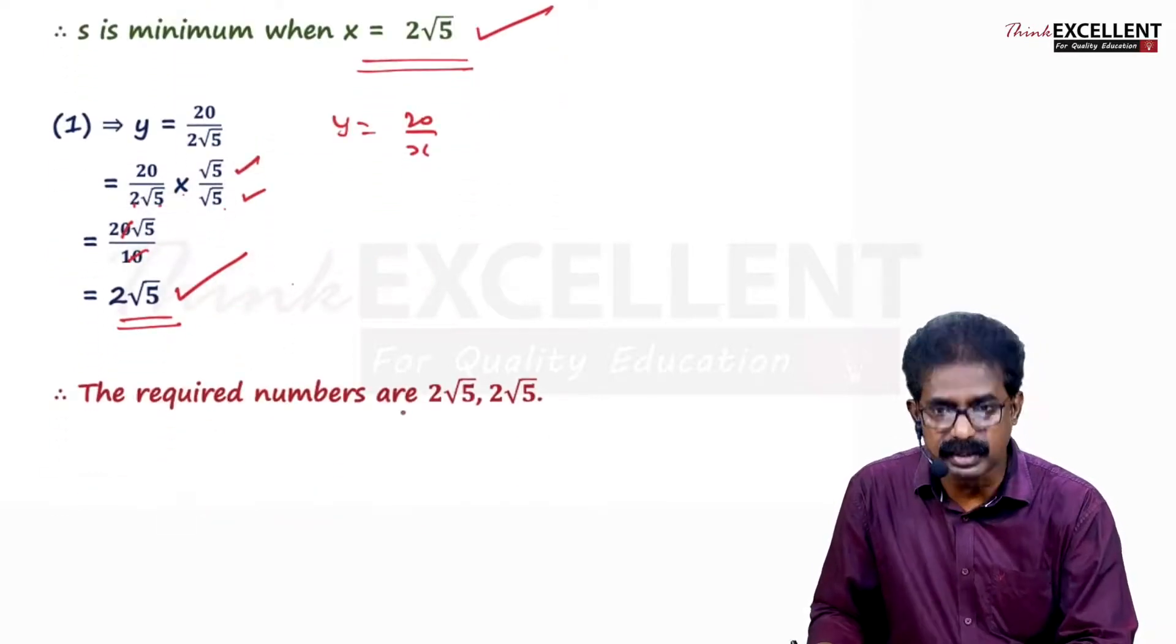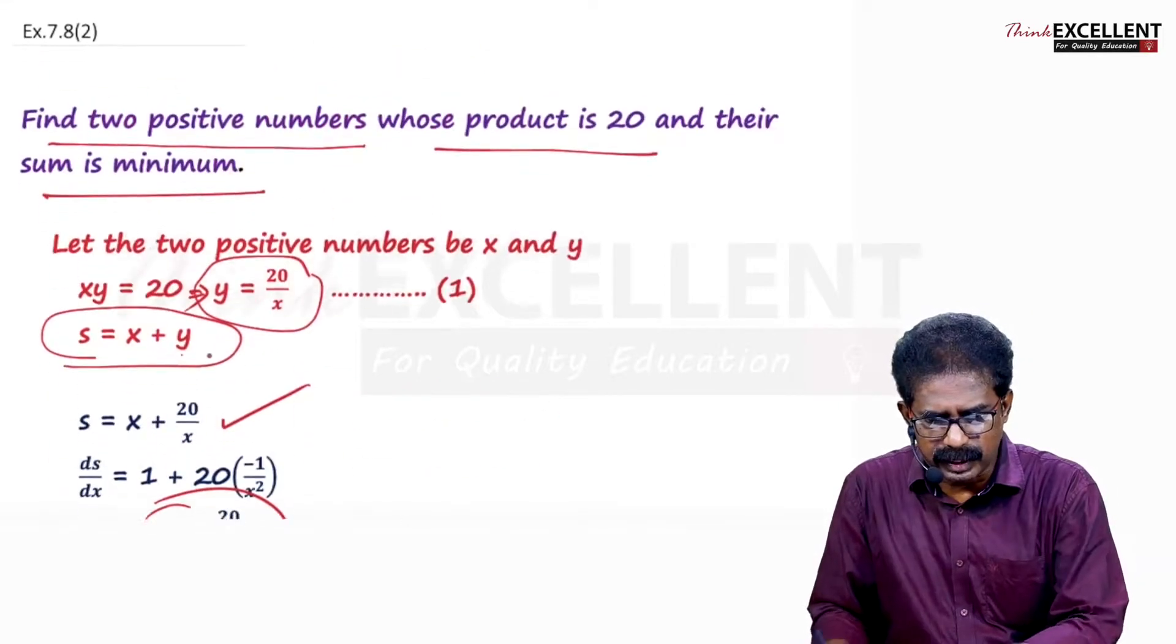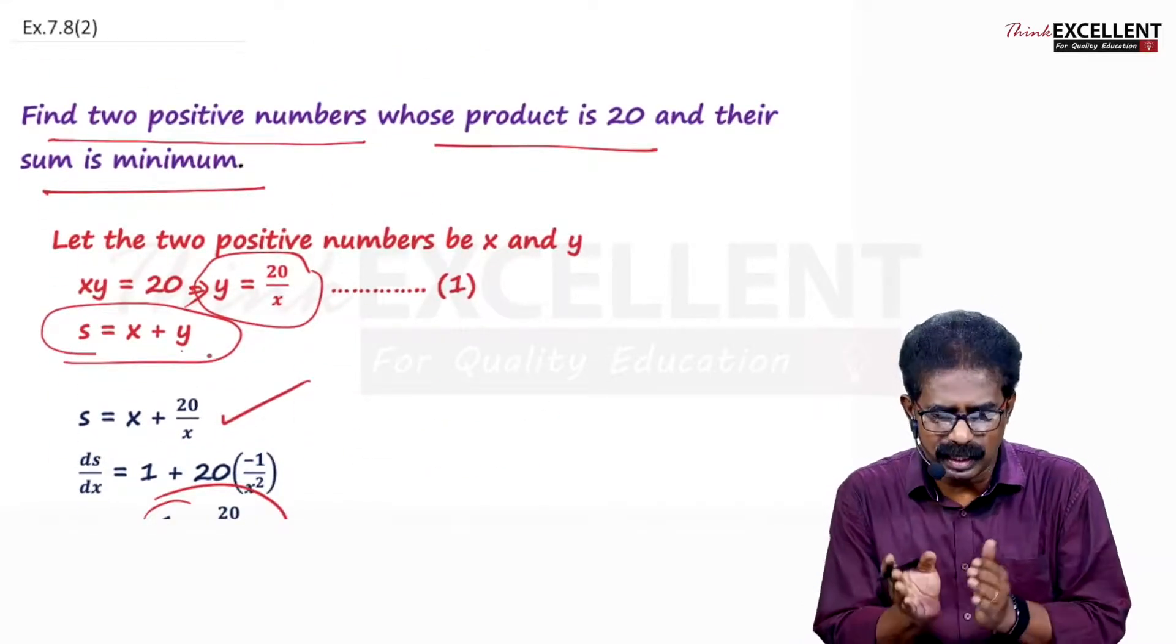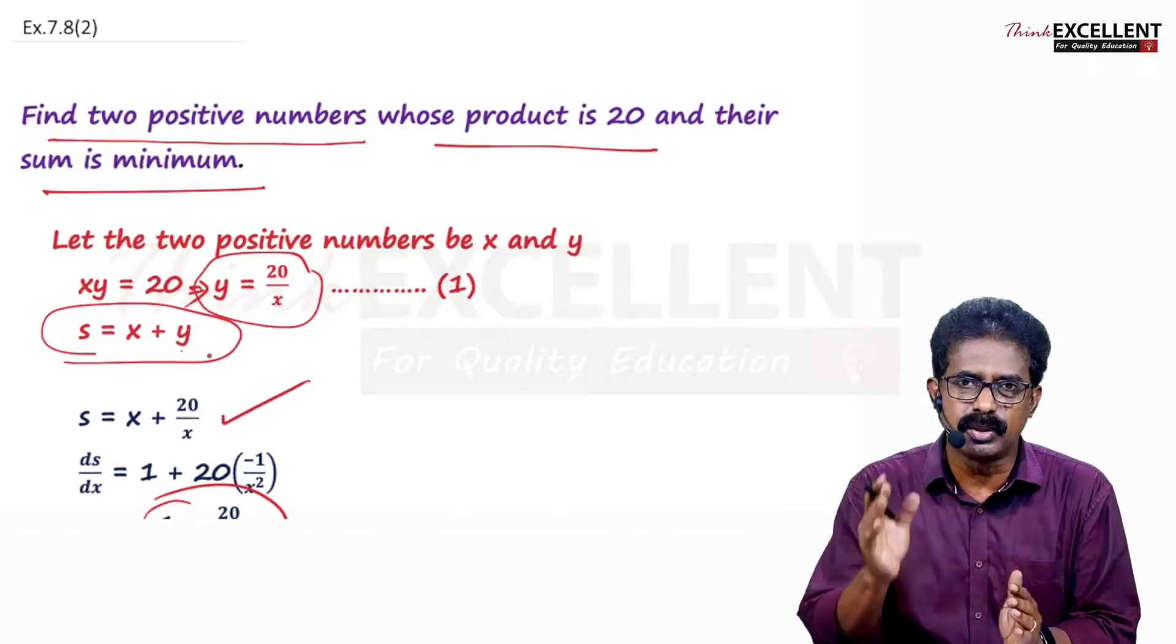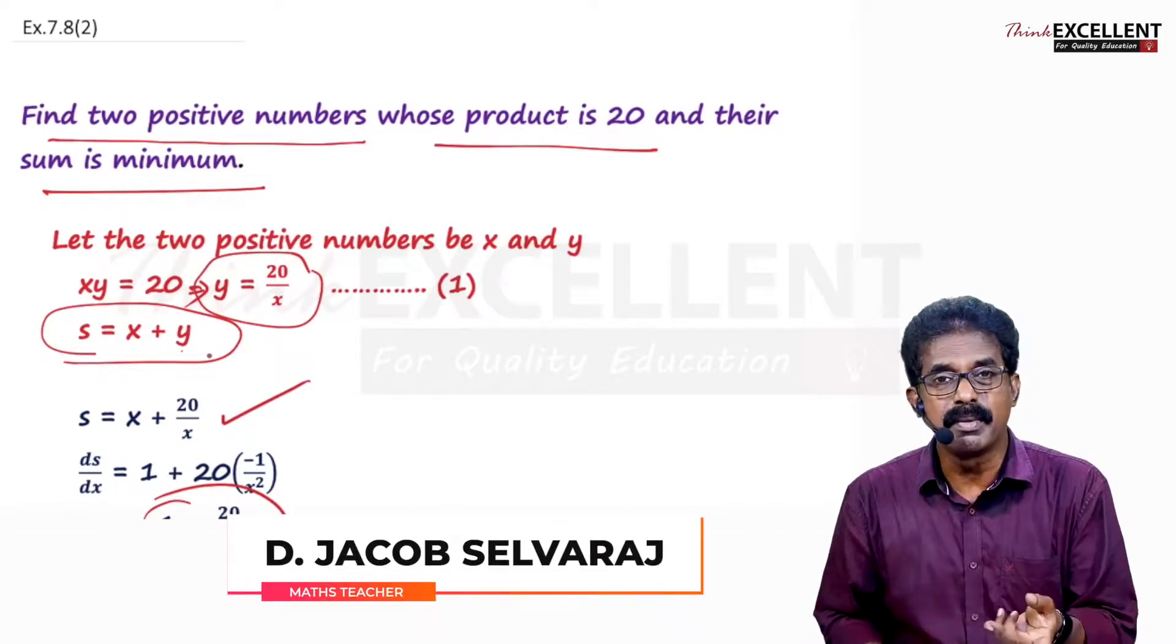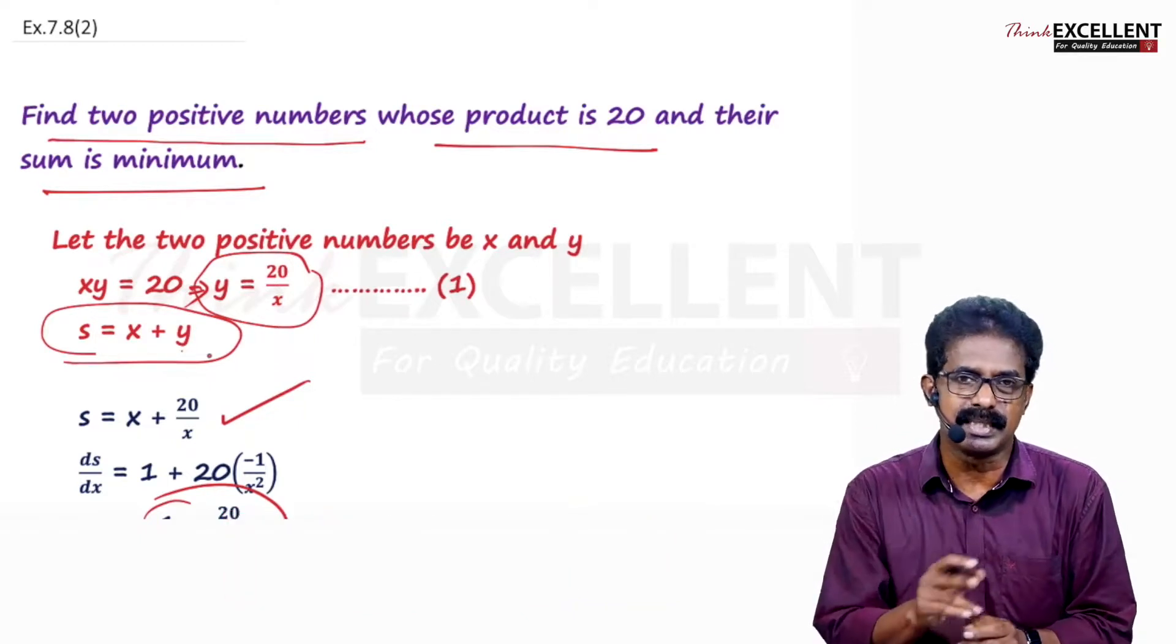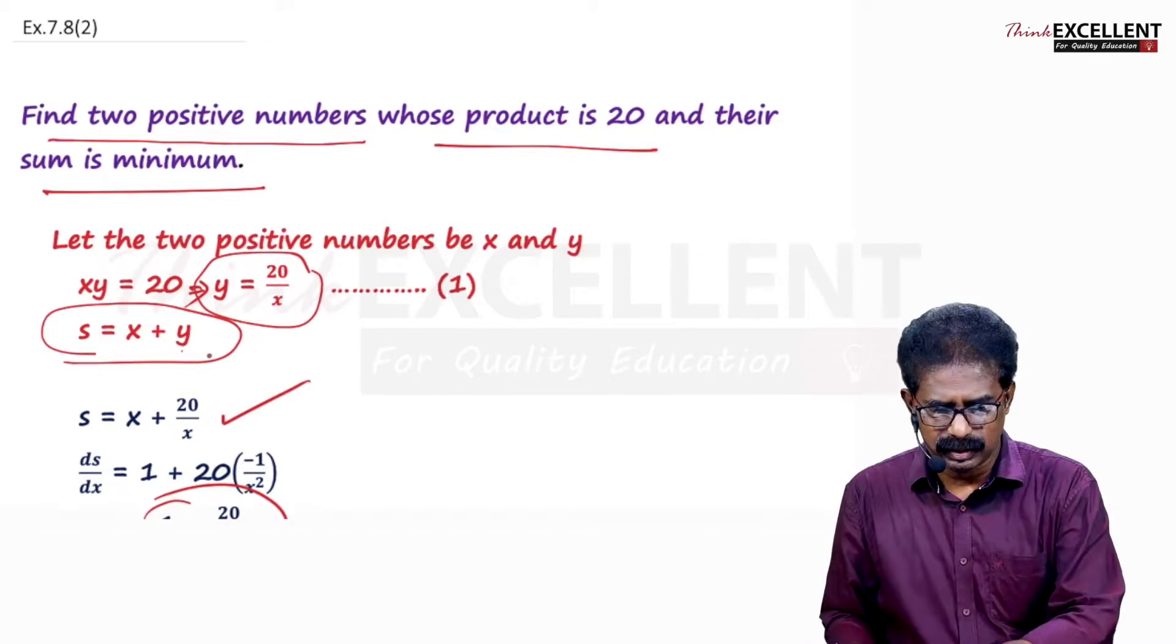So conclusion, the required numbers are 2 root 5 and 2 root 5. Read the question very carefully. What is given? What you have to find? Here product is given, product is 20. So x into y equals 20, y equals 20 by x. Sum is minimum. So you find the sum, x plus y, take it as S. We have to minimize that. Hope you understood.